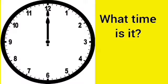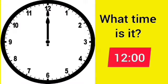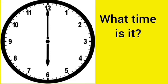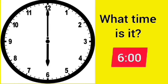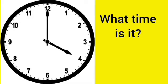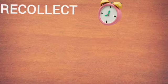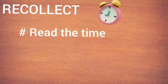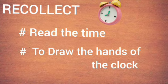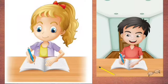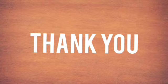What time is it? It's 12 o'clock. What time is it? It's 6 o'clock. What time is it? It's 4 o'clock. Today we have learned to read the time and to draw the hands of the clock. Copy this in your term book. Thank you, children.